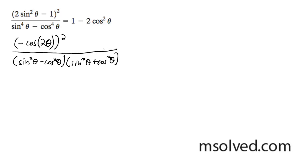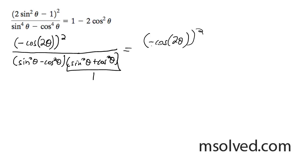What's going to happen next is this quantity here just becomes 1, and the next portion we can do is convert sine squared theta minus cosine squared theta into negative cosine 2 theta, so what we're going to get here is 2 theta squared, and we can convert this into that.